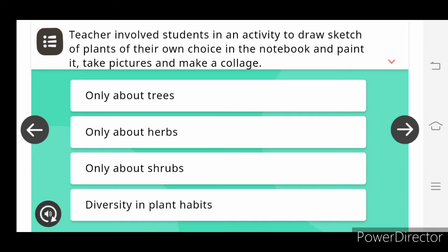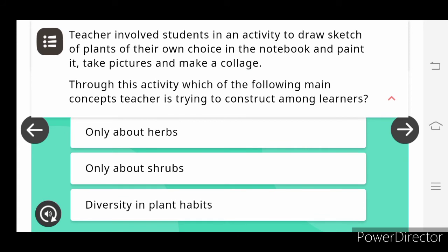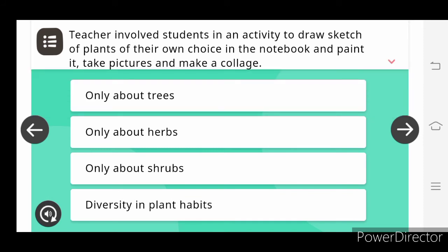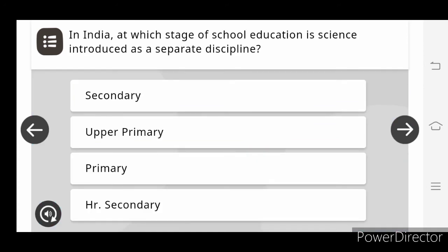The teacher involves students in an activity to draw sketch or plant of their own choice in the notebooks, plant it, and take the pictures and make a collage. Through this activity which of the following main concept teacher is trying to construct among the learner? In India at which stage of school education is science introduced as a separate discipline? Upper primary.